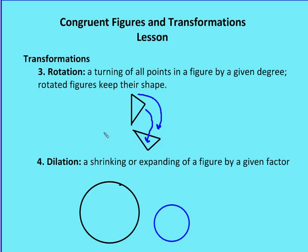And finally, a dilation is either shrinking or expanding of a figure by a given factor. So I could, in this case, let's just say that I shrink this circle by a factor of one-half. I could also expand, in this case, the smaller circle by a factor of two. Those would both be dilations in a transformation.